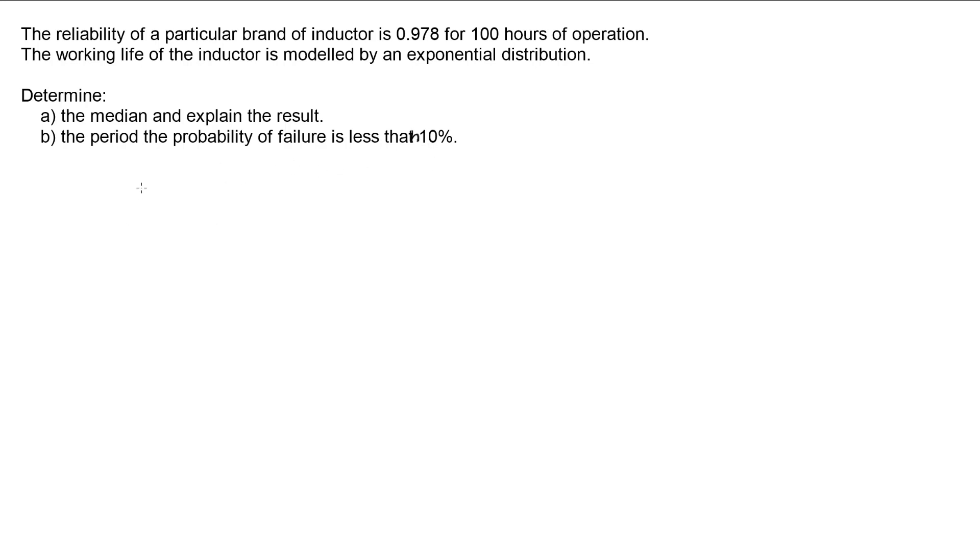So let's start off with part A. We have the reliability of 100 hours of operation is 0.978. Because we're in exponential distribution we can use a reliability function, so the reliability of 100 is equal to 0.978. For exponential distribution, the reliability function of some time is e to the negative lambda t.